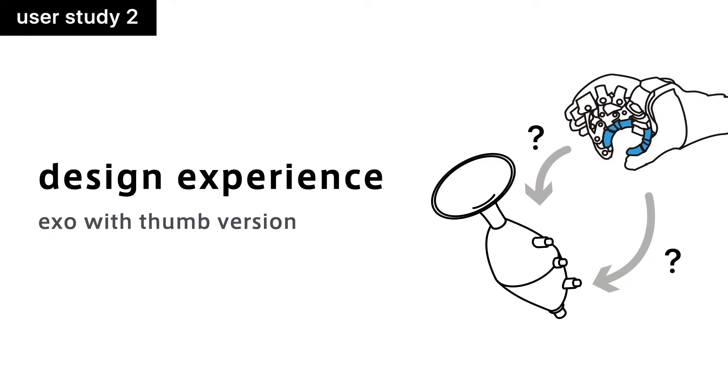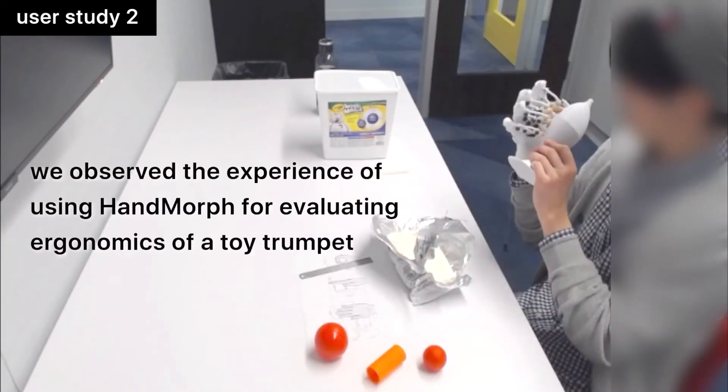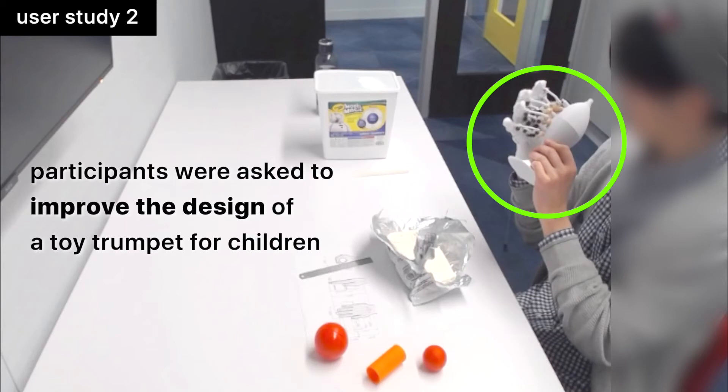We also investigated whether Hand Morph can assist in designing a product for children. In this study, we observed the experience of using Hand Morph for evaluating ergonomics of a toy trumpet. Participants were asked to improve the design of a toy trumpet for children.